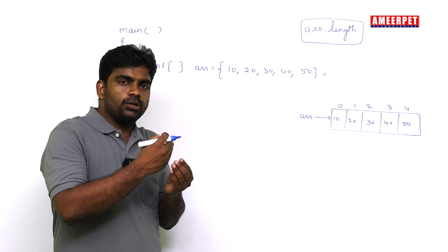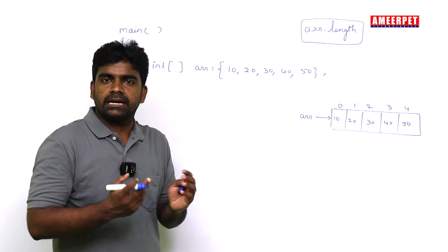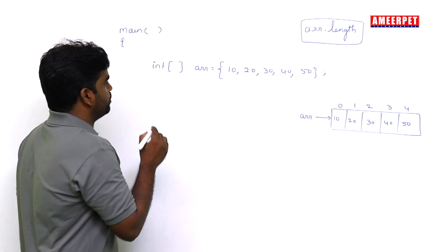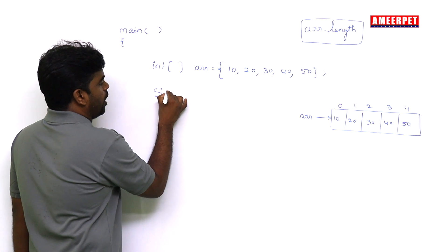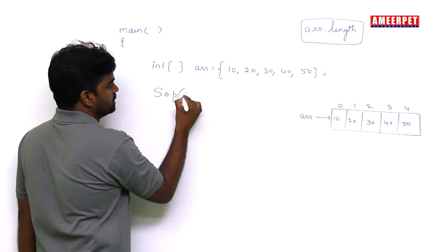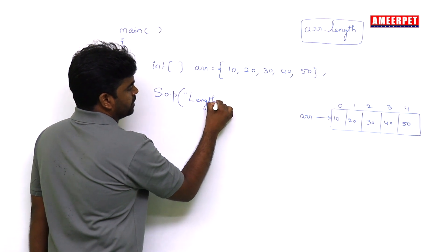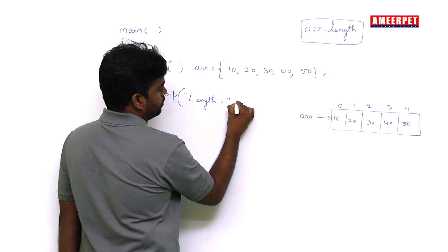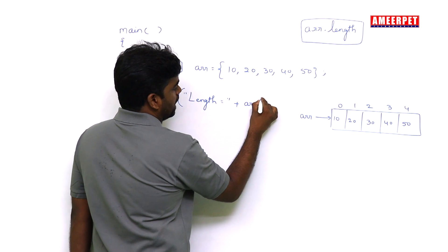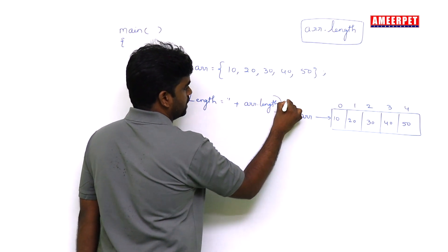If you want to collect it into one variable, then display, that is also allowed. First, System.out.println, I just want to print length. This is one way: length is equal to plus arr.length.